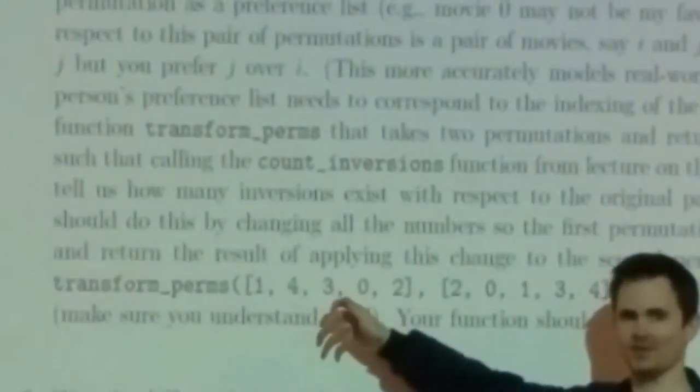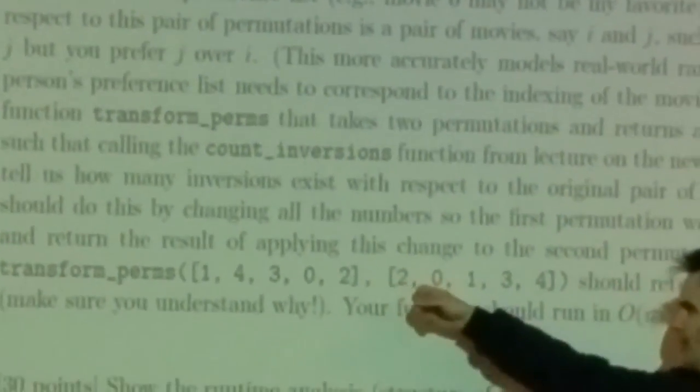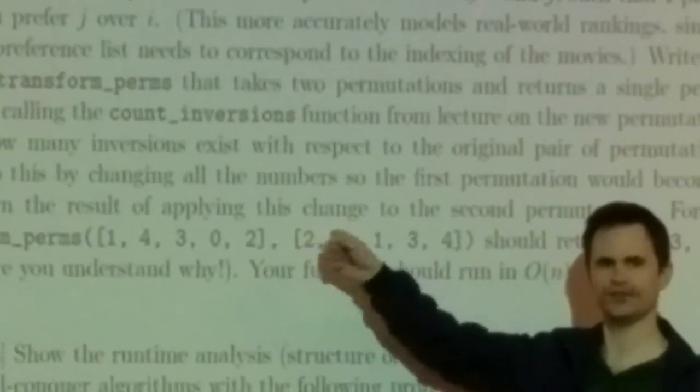We want a linear time algorithm, so the idea is to preprocess the first list to create another list. This is just like inverting permutations from the stable matching material — inverting the wife list to get the husband list, inverting the preference list to get the ranking list. This is exactly the same thing: preprocess the first list to invert it, so that when we ask where was movie 2 on the first list, we just look it up directly.